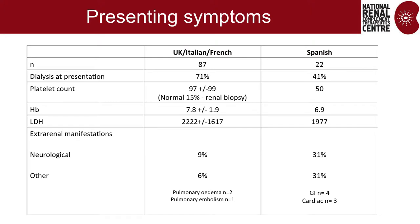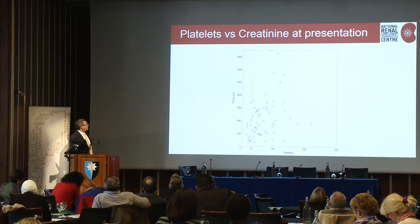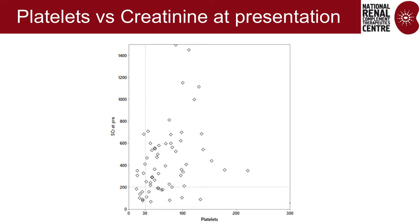At presentation, unsurprisingly, patients are anemic, thrombocytopenic, and have acute renal failure. Dialysis at presentation is quite common — about 71% will require it. Extra-renal manifestations are really infrequent. There has been discussion about low platelet counts and low creatinine being markers of exclusion for atypical HUS, but this approach will cause you to miss many patients. Getting ADAMTS13 quickly is critical, and it's pleasing that we can now get it seven days a week across the country.